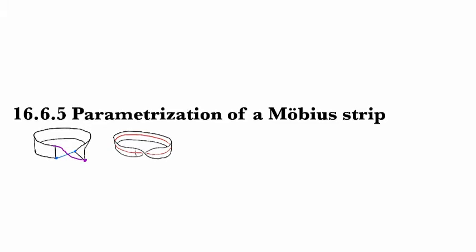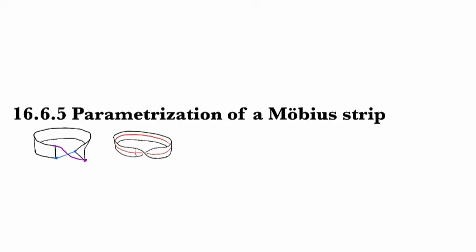I guarantee you will not be able to predict what happens correctly for both of those things. Anyways, I'll leave that for you to mess with. Now, how do we parametrize a surface like this? It's not the graph of a function or anything else, but it is actually a ruled surface — there are all kinds of little straight lines around this thing. We did the cylinder already, so there might be a way to do this.